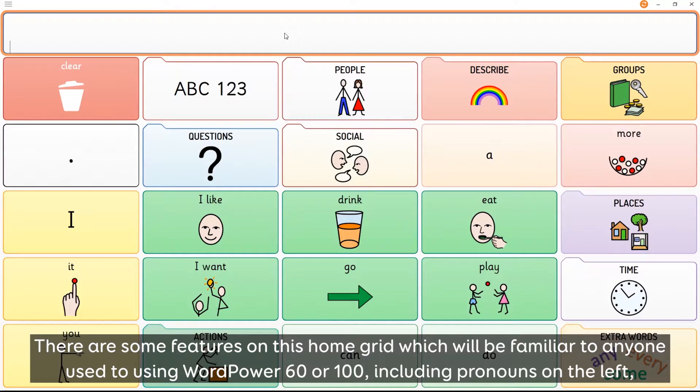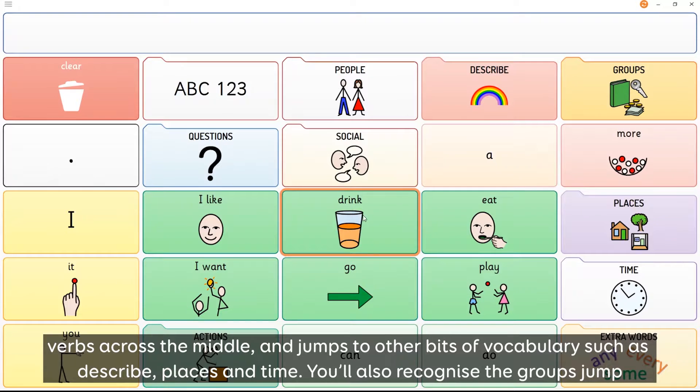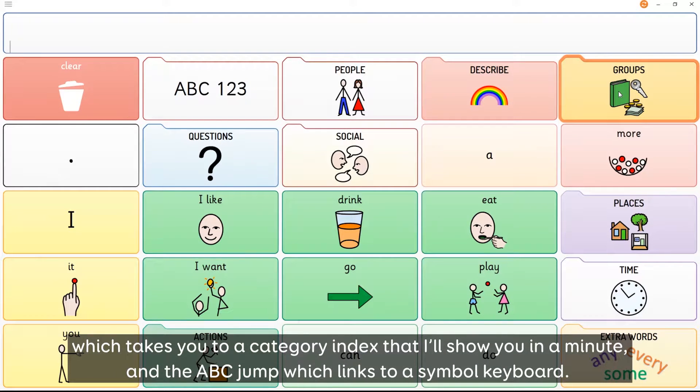There are some features on this home grid which will be familiar to anyone used to using WordPower60 or 100, including pronouns on the left, verbs across the middle and jumps to other bits of vocabulary such as describe, places and time. You'll also recognize the groups jump which takes you to a category index and the ABC jump which links to a simple keyboard.